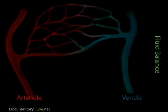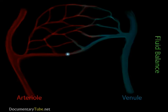From your understanding of the circulatory system, you know that the blood passes through the arteries, arterioles, and then the capillaries. The capillary walls allow the fluid portion of the blood to exit the capillaries into the surrounding tissues. Once the fluid leaves the capillaries, it is called interstitial fluid.